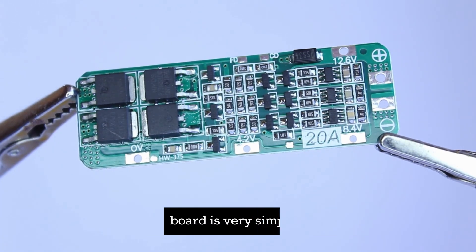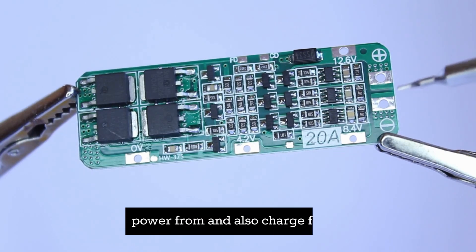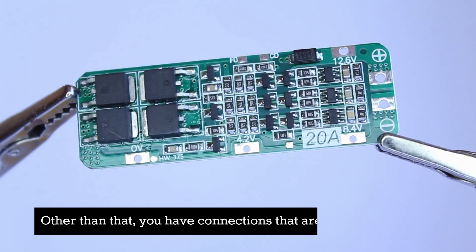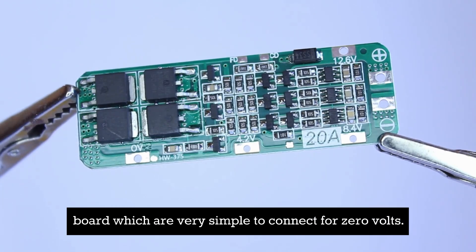Connection to this board is very simple. You have your primary positive and negative, which you can draw power from and also charge from. Other than that, you have connectors spaced around the board, which are very simple to connect.